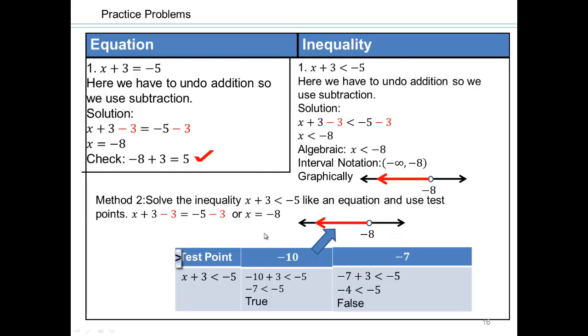So what's the second method? Take the inequality, forget about the inequality sign, put equal to sign, solve, then check if you're allowed to have equal to or not. So whatever number you get from the equation, plug them back in here. If it's a true statement, it's part of your solution.